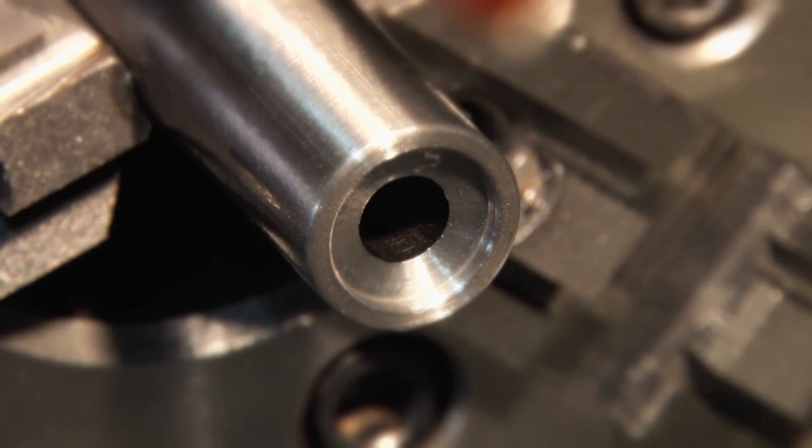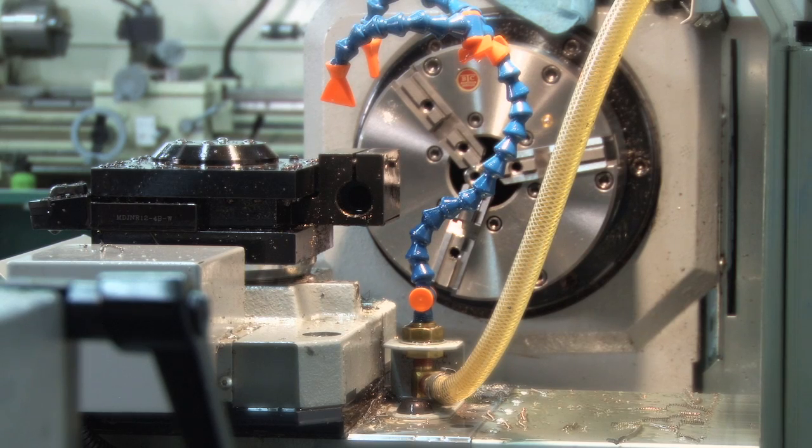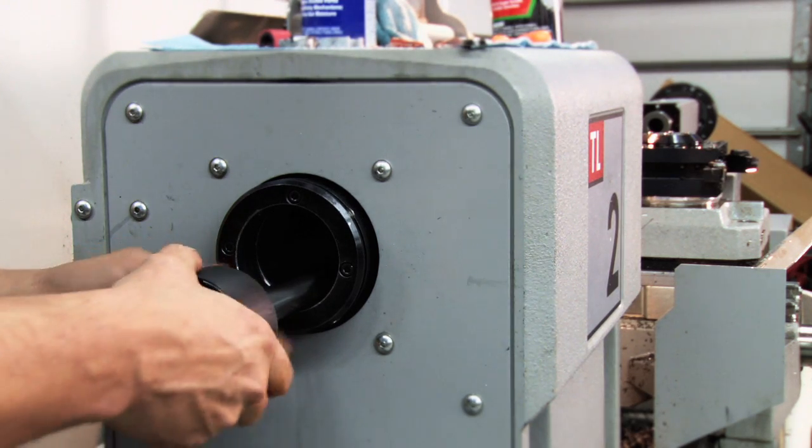A rifle crown is the last part of a rifle to touch the bullet. Special attention to the manufacturing processes will enhance the overall accuracy of the firearm.